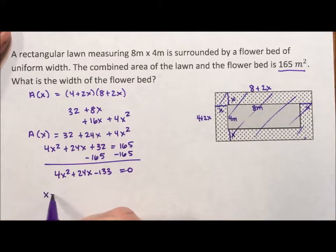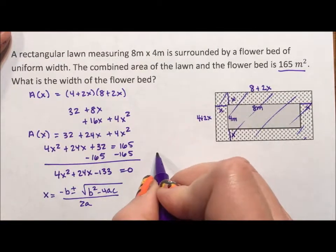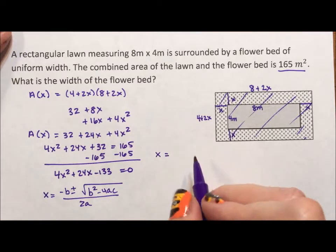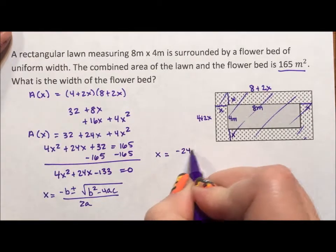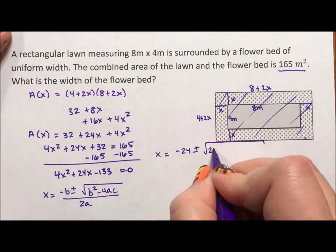So I'm going to use the quadratic formula. The quadratic formula is x equals negative b plus or minus the square root of b squared minus 4ac all over 2a. Which is 2 times 4.